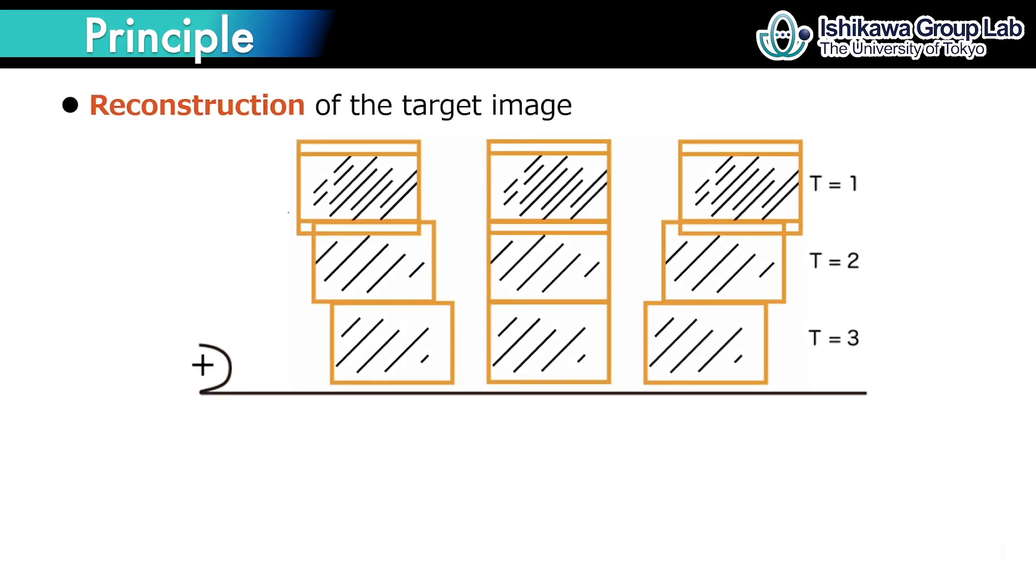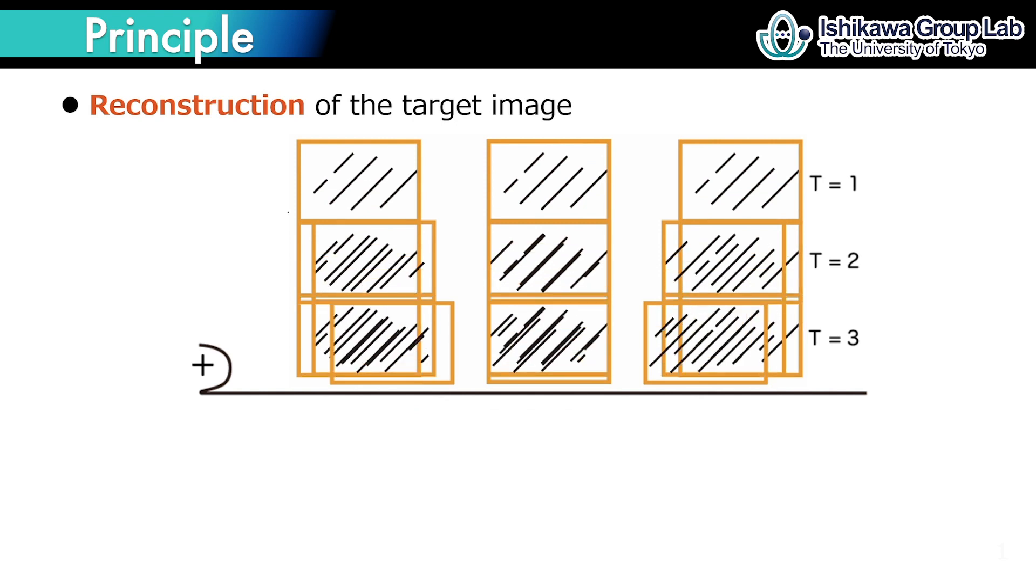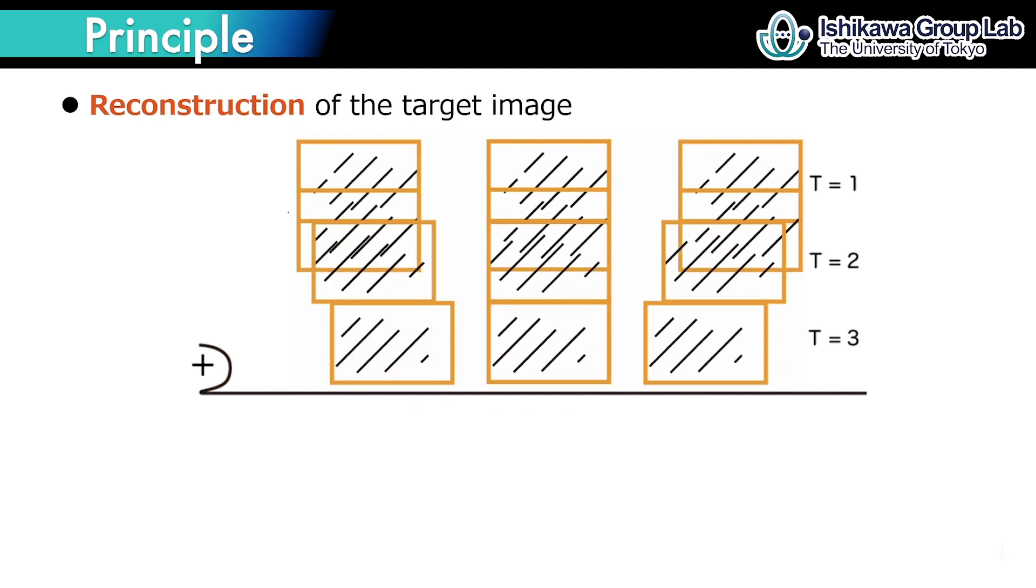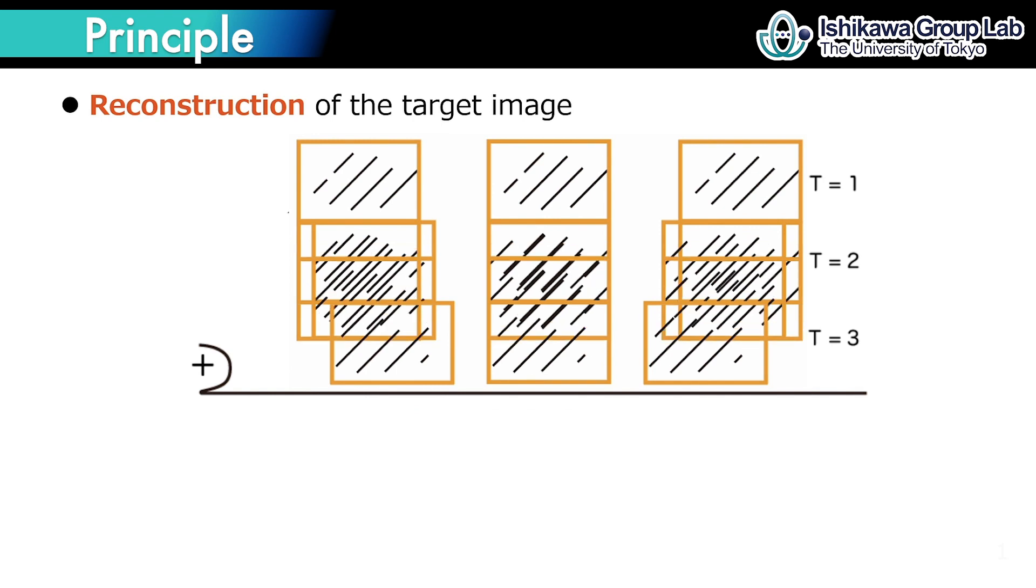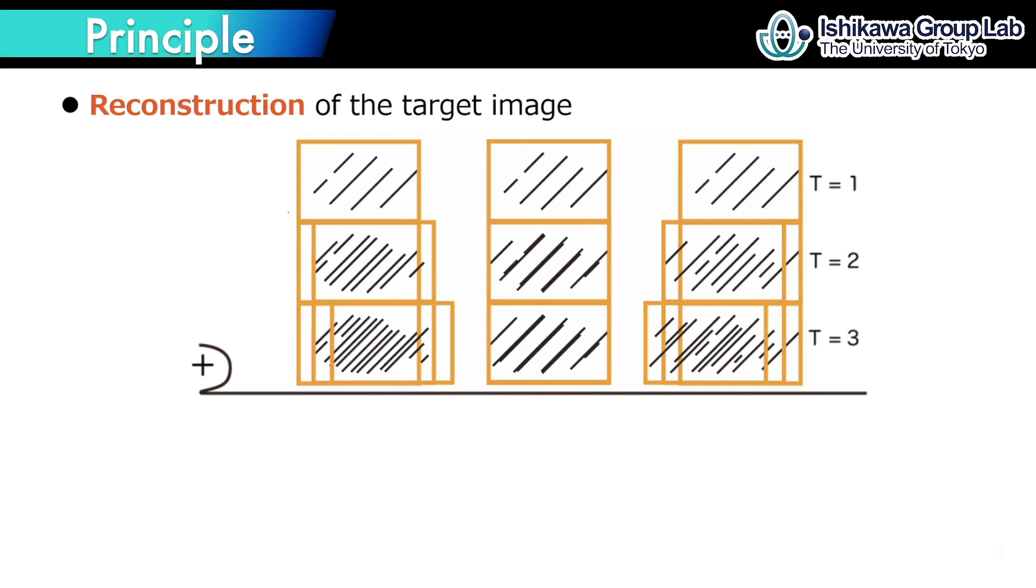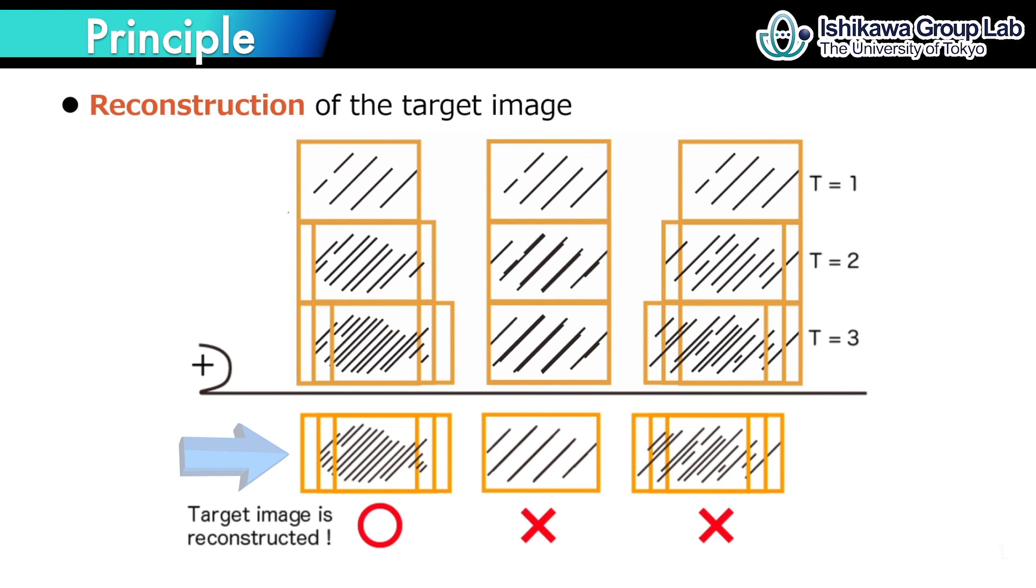The output shown on the bottom row corresponds to the projected image at each frame. When observers watch the frames with eye movements, the target image is reconstructed as a result of integrated after-images when the eye movement is corresponding to the assumed direction and speed.